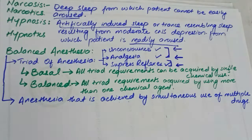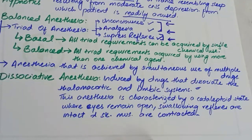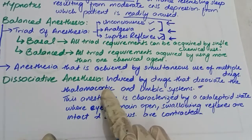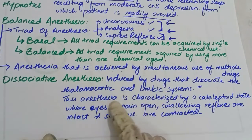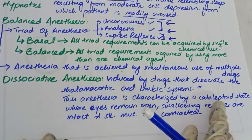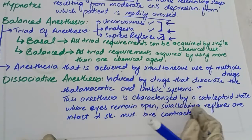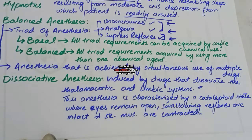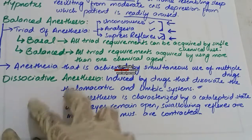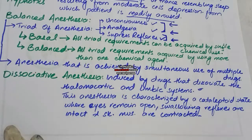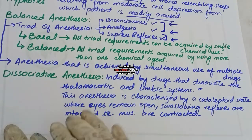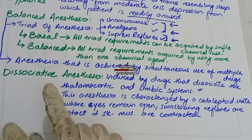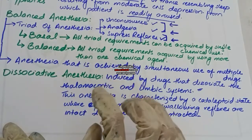Dissociative anesthesia is defined as anesthesia induced by drugs that dissociate the thalamocortical and limbic systems. It is characterized by a cataleptoid state where the eyes remain open, swallowing reflexes are intact, and skeletal muscles are contracted. We will study the thalamocortical and limbic systems and why they are dissociated in more detail when we cover dissociative anesthesia as a drug class.